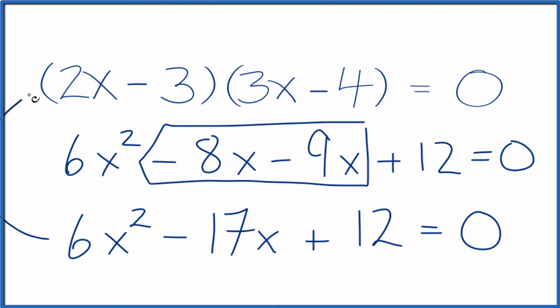And if you factored this, you would end up with where we started. This is Dr. B, expanding and simplifying 2x minus 3 multiplied by 3x minus 4. Thanks for watching.